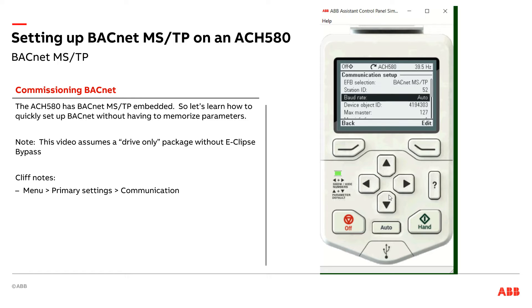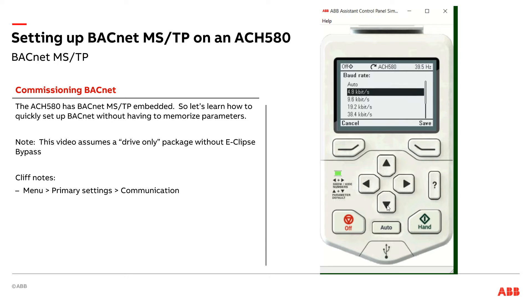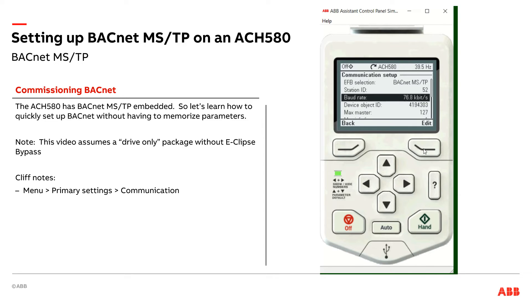You can set the baud rate. The ACH 580 does have auto baud detection, so usually I use that. But if I happen to know — which the controls contractor will know — what the baud rate is, let's say it's faster at 76.8, go ahead and set that up.